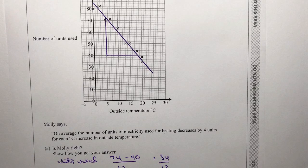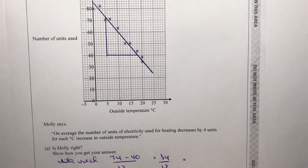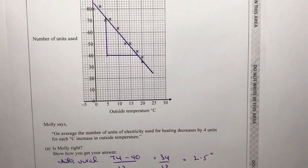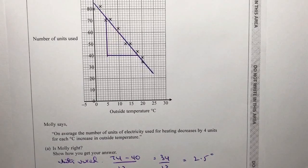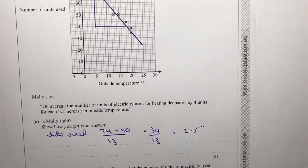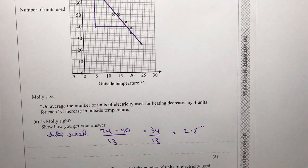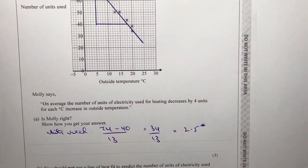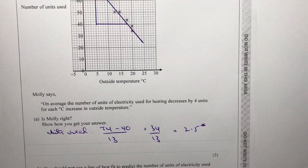So if I divide one into the other — I haven't got my calculator with me right now — but it's going to give me very roughly about 2.5 degrees. Essentially Molly is incorrect because she's saying that it decreases by 4 units. Well it doesn't — it decreases by approximately 2.5 units. So in this particular case Molly is incorrect.